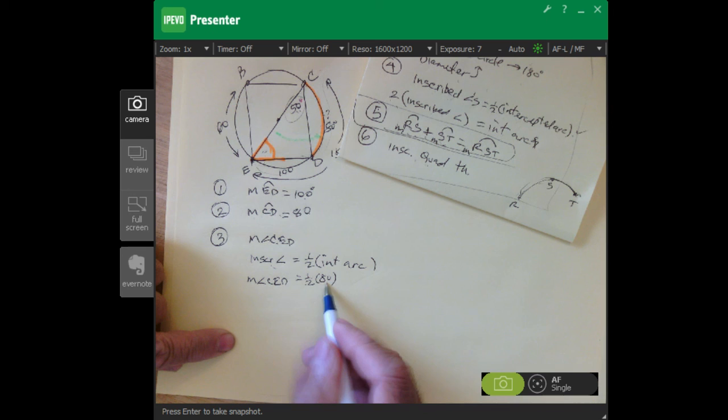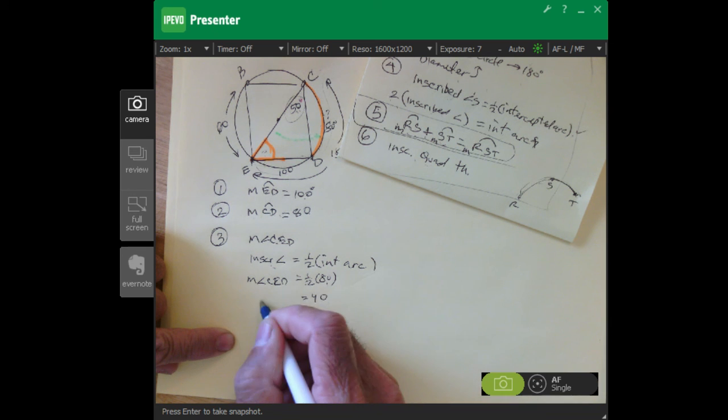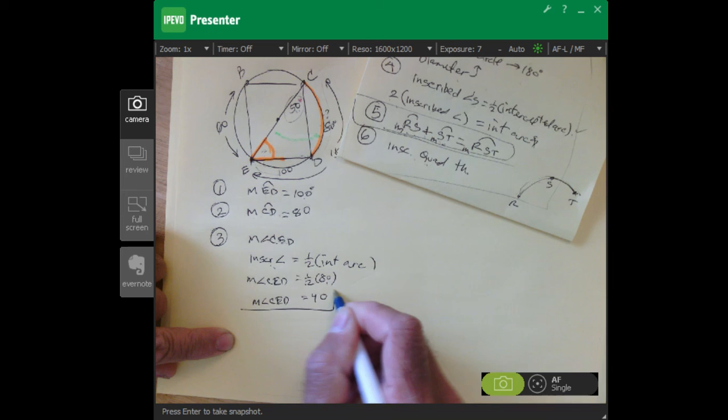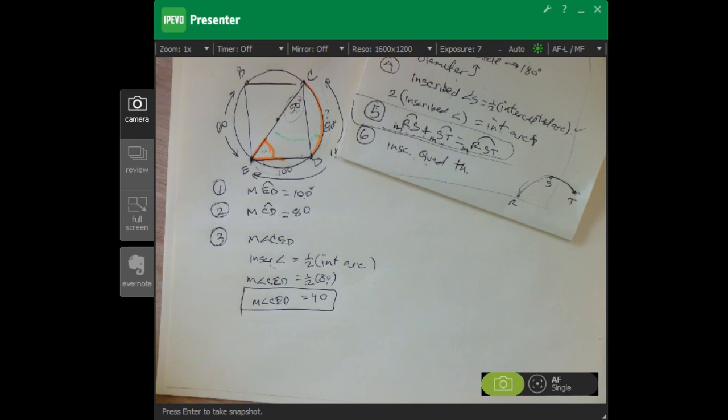So one-half of 80 is 40. The measure of angle CED is 40 degrees, and that's the end of that video.